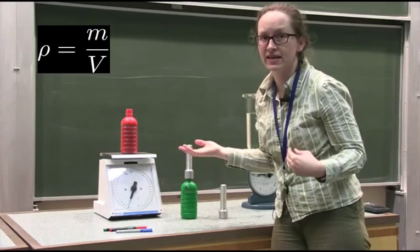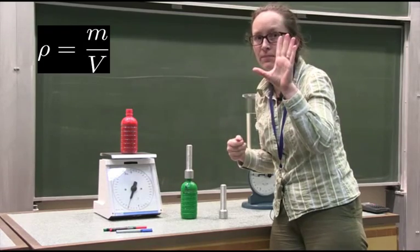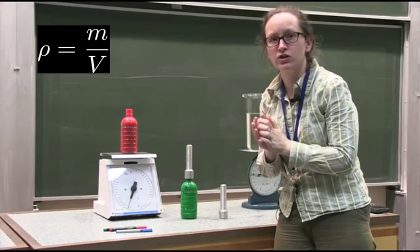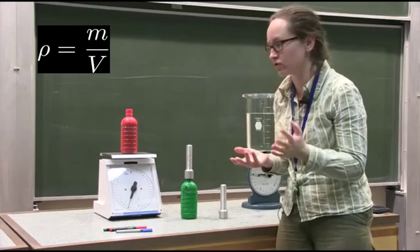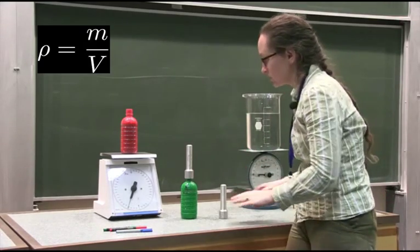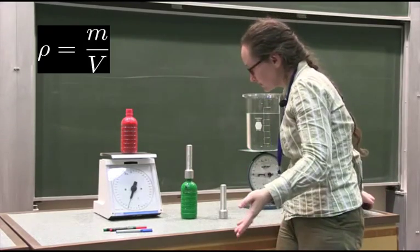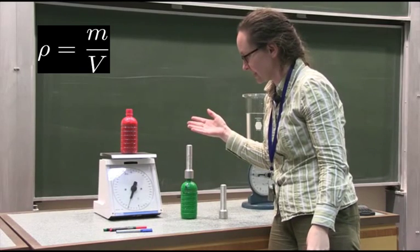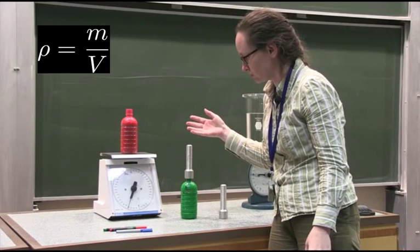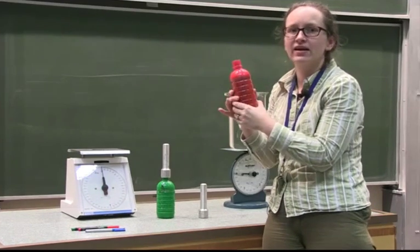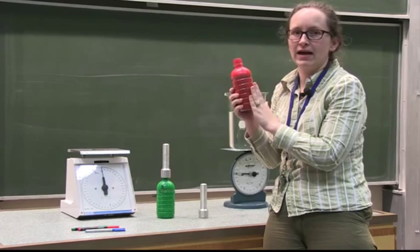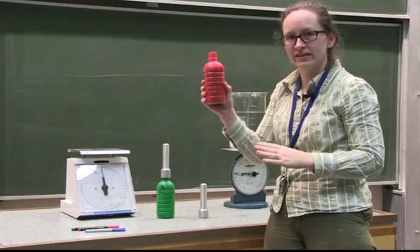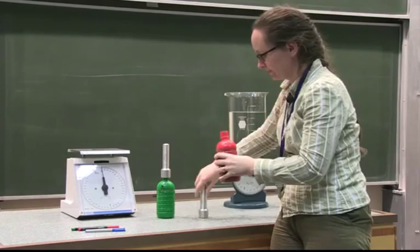To get the density of the red bottle, we do the mass divided by the volume: 1.2 kilograms divided by 600 millilitres, or 0.6 litres. This gives us a density of 2 kilograms per litre, which is quite a lot more dense than water.